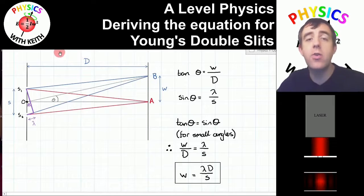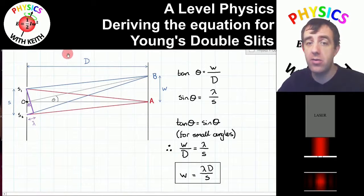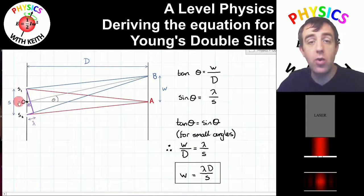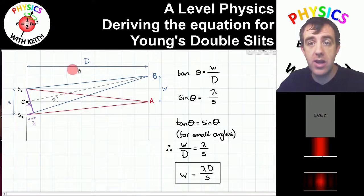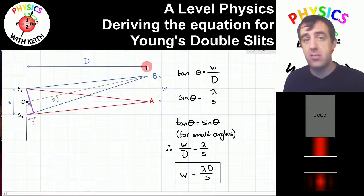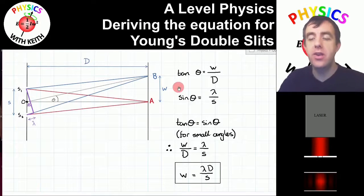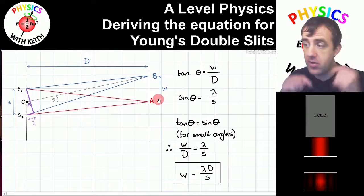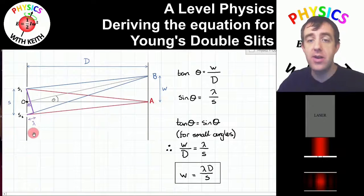The equation we are going to derive relates four variables: the distance between two slits in the screen blocking light, which we call s; the distance between that screen and the screen onto which the interference pattern is projected, which we call d; the distance between two adjacent bright fringes on the interference pattern, which we call w; and finally lambda, the wavelength of the light.